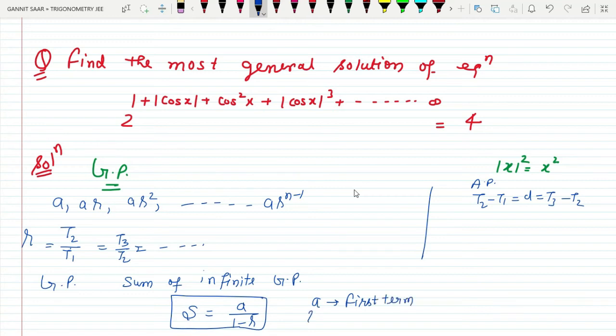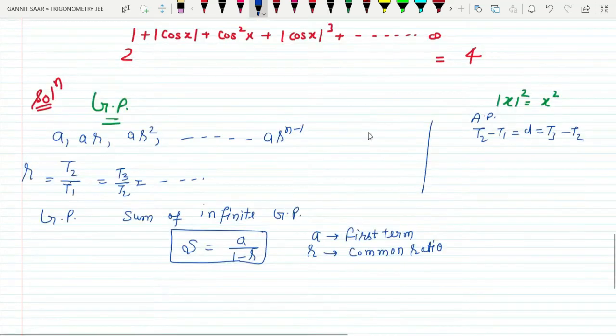And r is the common ratio. For sum of infinite terms of GP, this is the formula.